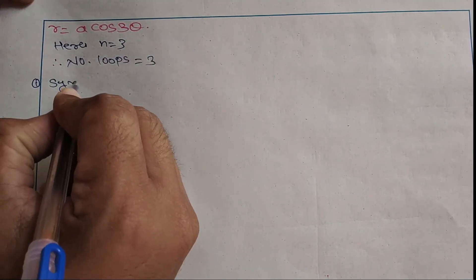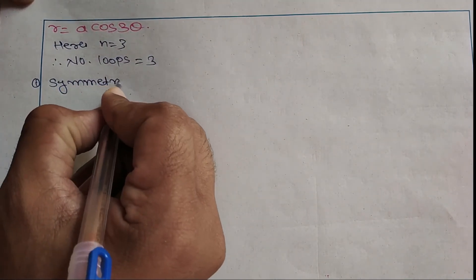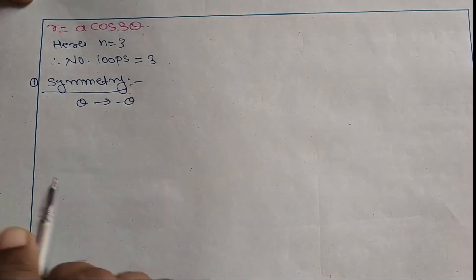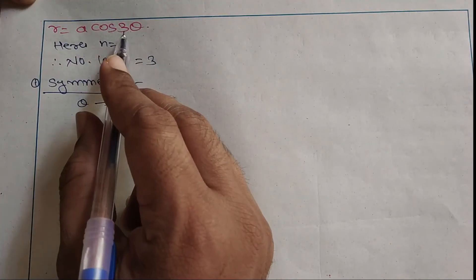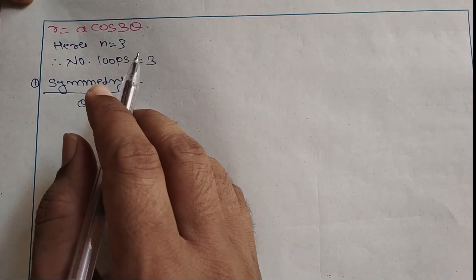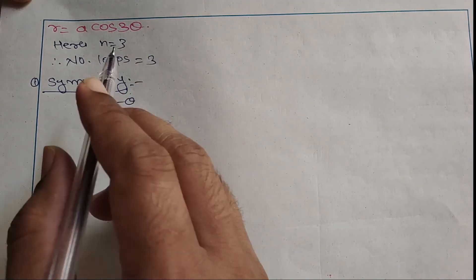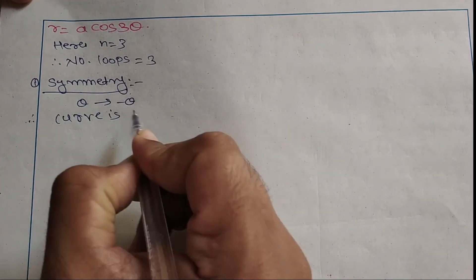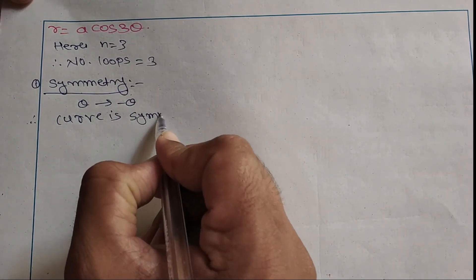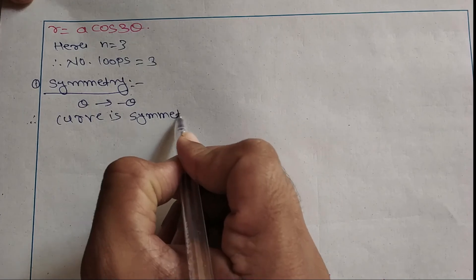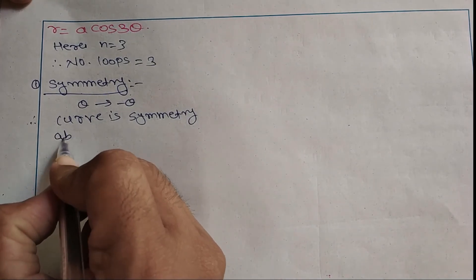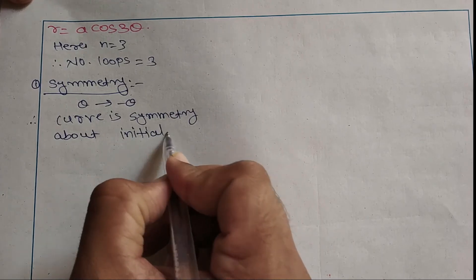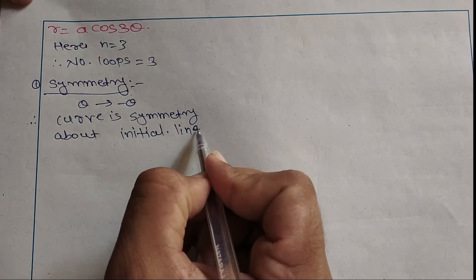First, symmetry. We know that if we replace θ by -θ, the given equation does not change. Therefore, the curve is symmetric about the initial line.